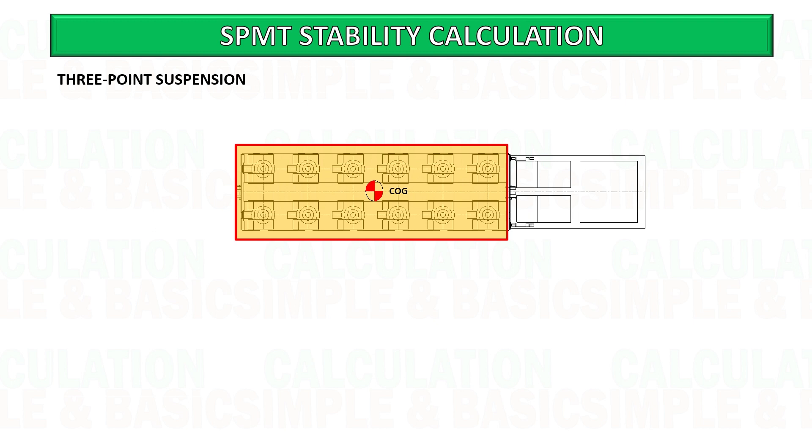In this example we will use three-point suspension and we do the grouping of axle lines into three groups: Group A, Group B, Group C.